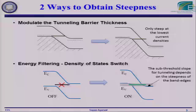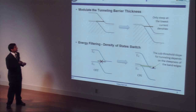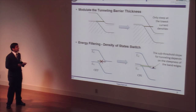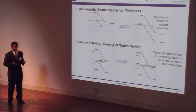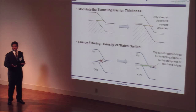To understand what's going on, we need to look at the two ways to get a sharp turn-on. The first is controlling the thickness of the tunneling barrier — applying gate voltage increases the electric field, makes a thinner barrier, and gives higher current. The problem is this only works well at low current densities. The alternative is energy filtering: when the conduction band and valence band don't overlap, there's no state to tunnel to, giving a very sharp turn-on. The problem is that these band edges aren't well defined — there are states below the band edge that allow current to flow when it should be off.